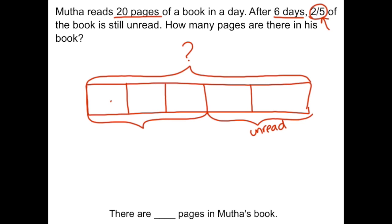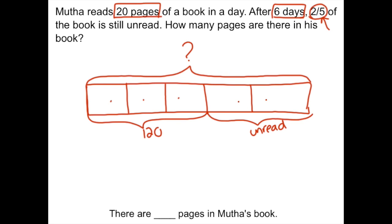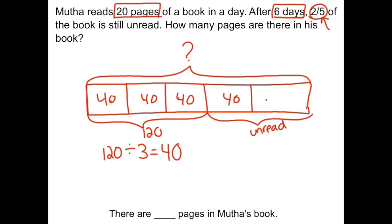We can figure out the three-fifths from the other information given. We know he reads 20 pages a day, and after six days he had two-fifths left over. So to figure out those three parts, we multiply 20 times six: 20 pages a day for six days means he read 120 pages. So I label that three-fifths as 120. Using the unit method, 120 divided by three equals 40 per unit. To find the whole, we do 40 times five, which is 200. So there are 200 pages in Muthah's book.